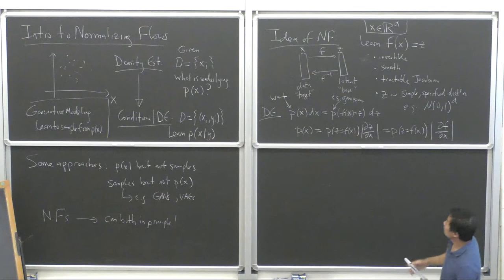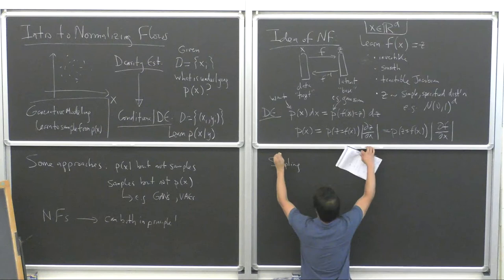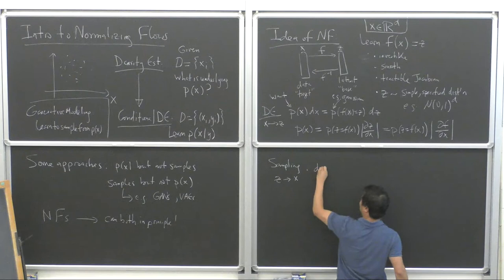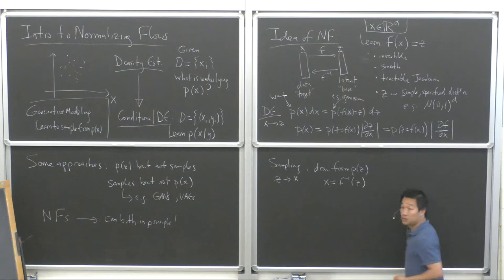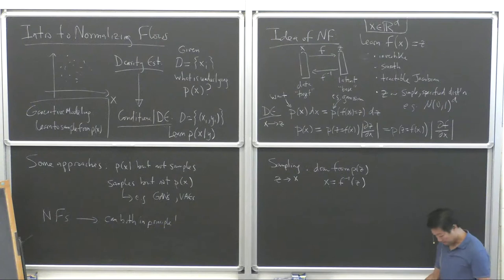So that's density estimation — going from X to Z. And sampling, or generative modeling, is just going in the other direction: Z to X. We draw from P of Z, map our samples to X-space, and then we have samples that follow P of X.